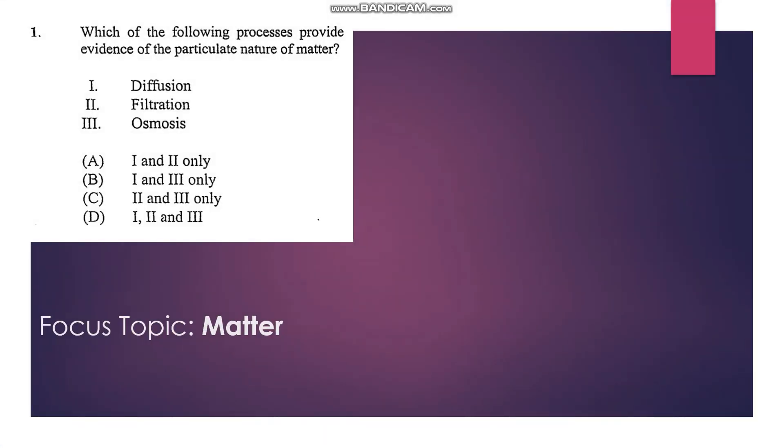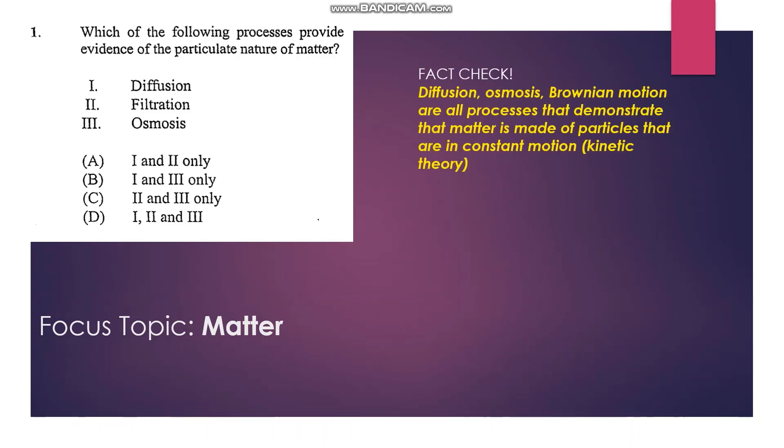Question 1 asks which of the following processes provide evidence of the particulate nature of matter. Based on what we know, diffusion, osmosis, and Brownian motion are all processes that demonstrate that matter is made up of particles that are in a constant state of motion. We also know that filtration is a separation technique, so our answer would be diffusion and osmosis, which is 1 and 3 only, so that's B.